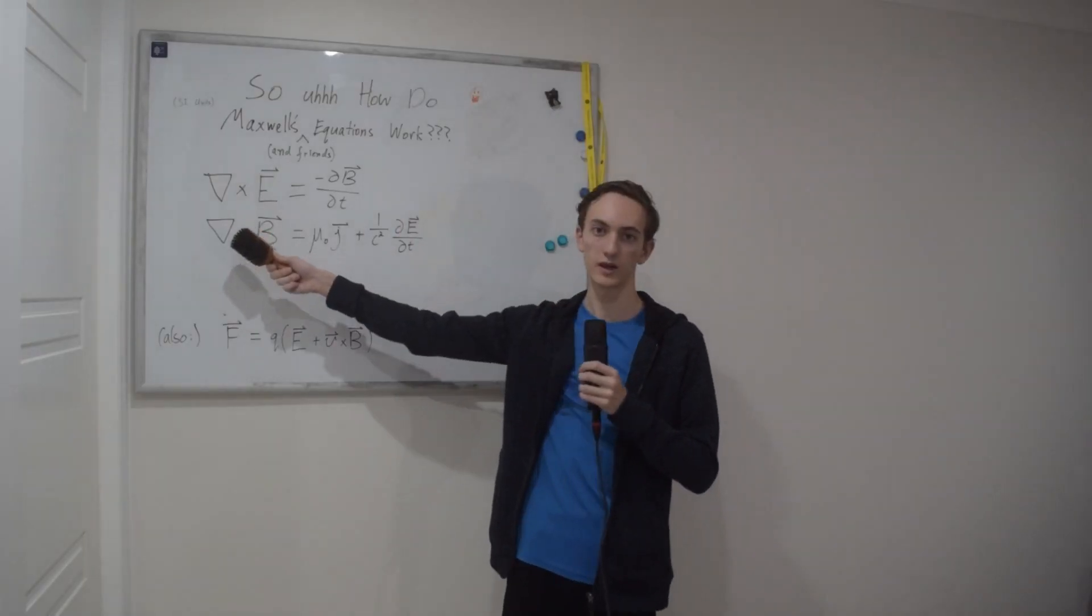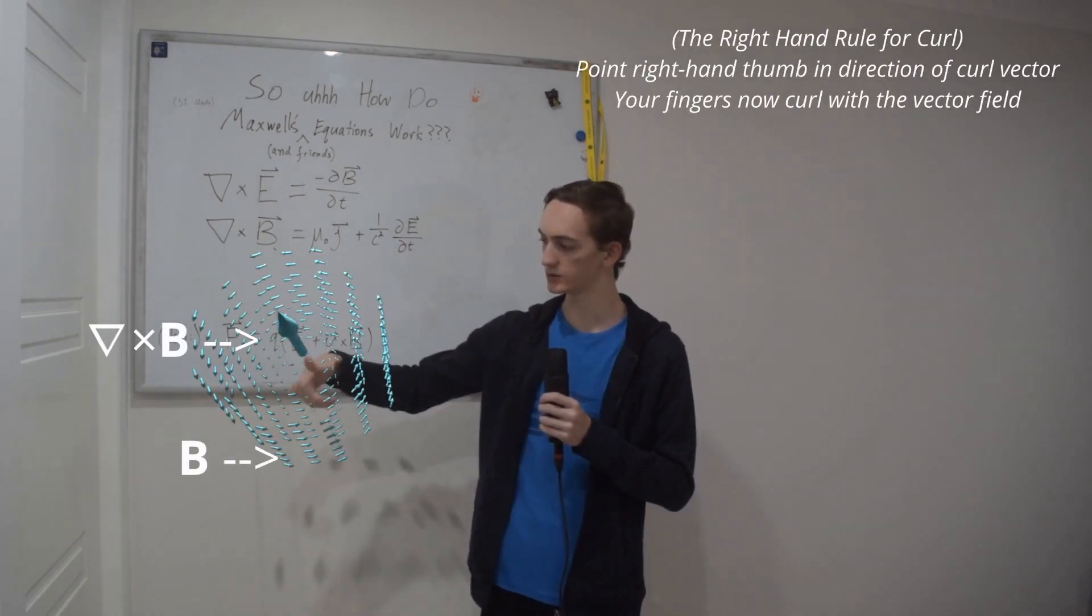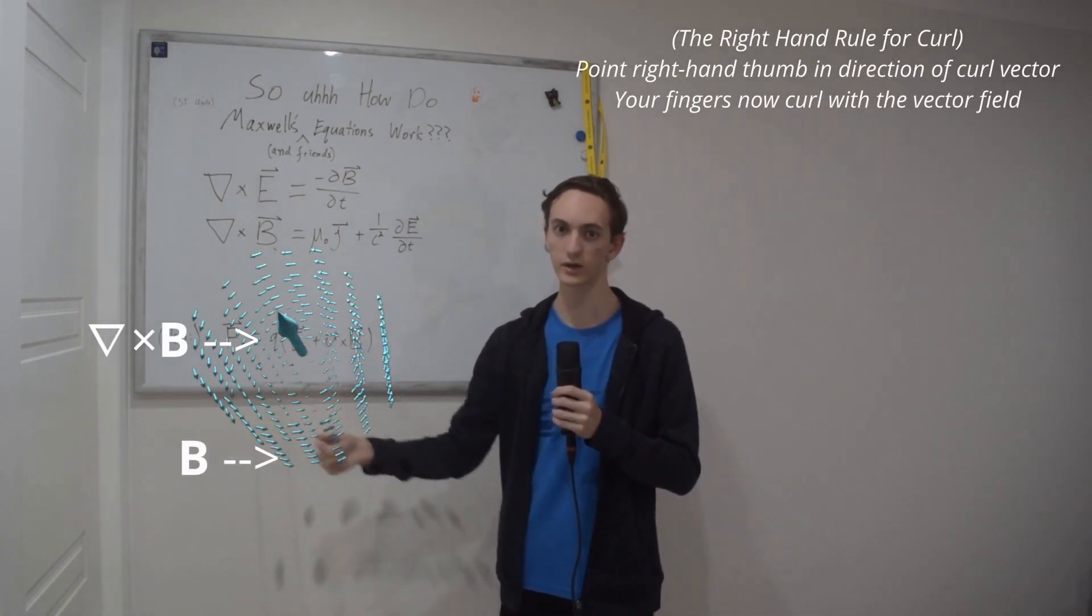Step three, the silly looking triangle multiplication means curl. So if the curl of the Barry field is this, then we use our right hand like this to show that Barry's curl around this point anti-clockwise.